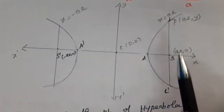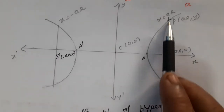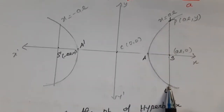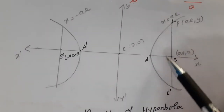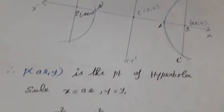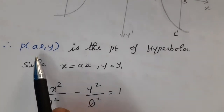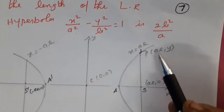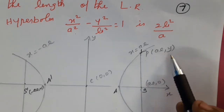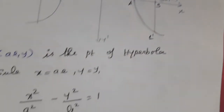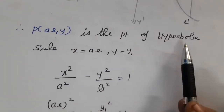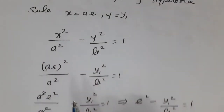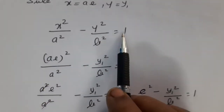What is the length of the latus rectum? That is L and L dash. The latus rectum passes through the focus point. Therefore we are going to find the length LL dash = 2b²/a. Now P = (ae, y) is a point on the hyperbola. Substitute x = ae and y = y₁ into the equation of the hyperbola.